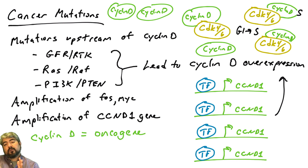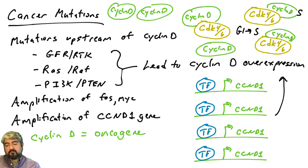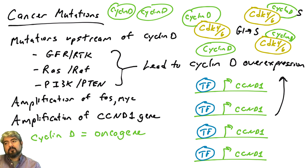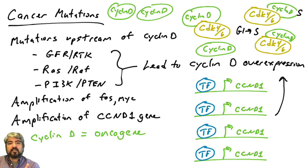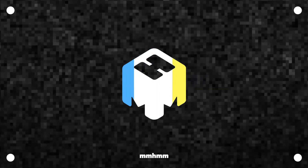In the next video, we're going to talk about what cyclin D actually does when it joins forces with CDK4 and CDK6 to push cells through the cell cycle. We'll talk about RB protein, cyclin E, and the restriction point. Hopefully from this video you have an appreciation of what regulates cyclin D in a normal cell and how cyclin D could be dysregulated in a human cancer cell.